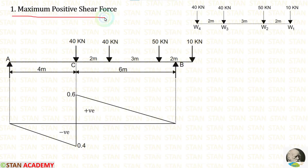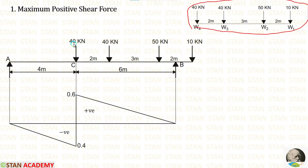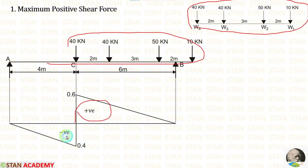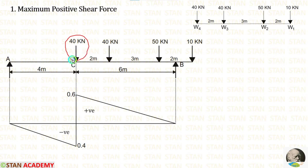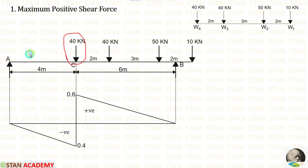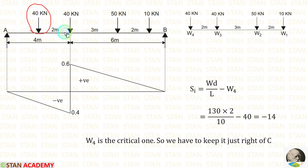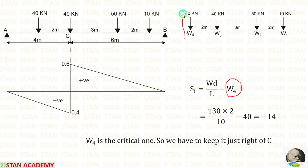Now let us calculate the maximum positive shear force. We have 4 loads and we have to keep these 4 loads over the positive shear force diagram. Right now W4 is at point C. In some cases, when we move 1 or 2 loads to the left side, the positive shear force may increase. Let us move W4 to the left of C and check whether we have any decrease or increase. When we move W4 to the left side, W3 will come to point C. Let us apply the shear increment formula: WD by L minus W4, where W4 is the load we moved to the left of C.